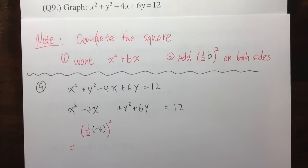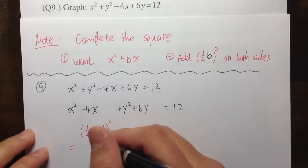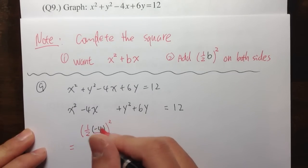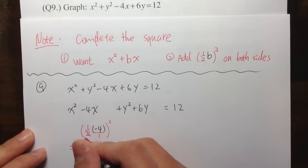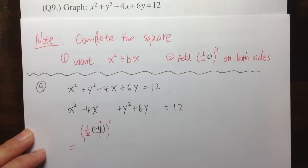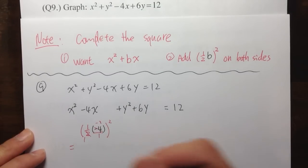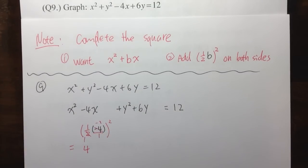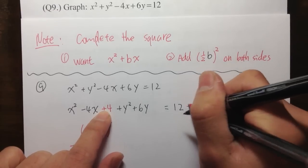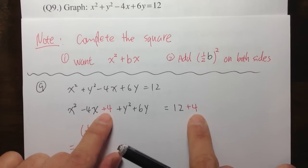You have two choices for doing this calculation — we'll first do it by hand. Looking at negative 4, we multiply by one half: negative 4 over 1, and 2 goes into negative 4 negative 2 times. Then negative 2 to the second power gives positive 4. So I need to add 4 on the left side and also add 4 on the right-hand side — add 4 on both sides.